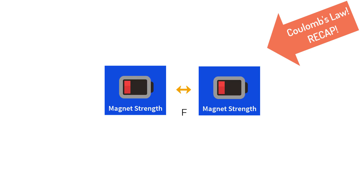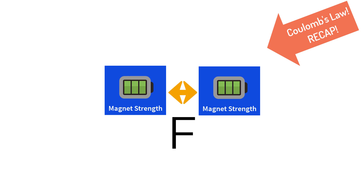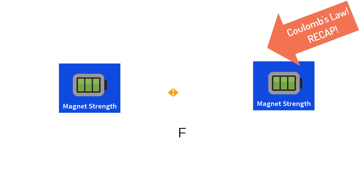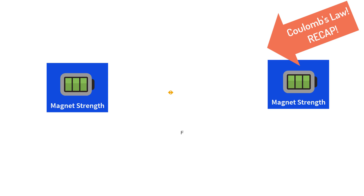Let's think about magnets — they work in a similar fashion. If I put two magnets together, there is a force between them. If I increase the strength of those magnets, that force increases as well. But if I increase the distance between those magnets by pulling them apart, that force drops significantly. These are the same set of relationships that are seen with electric forces as well.